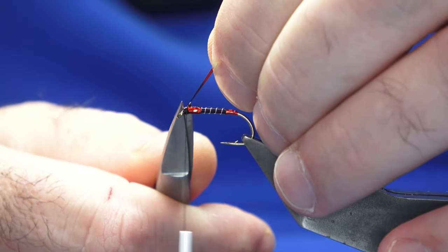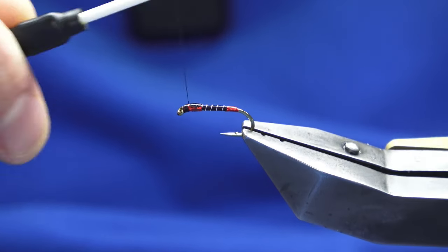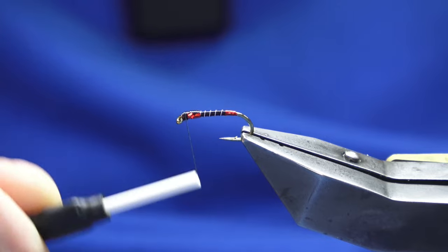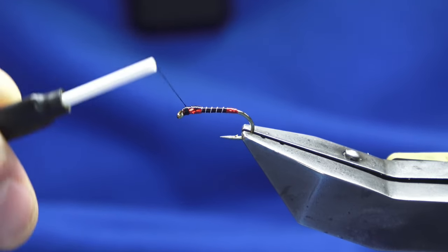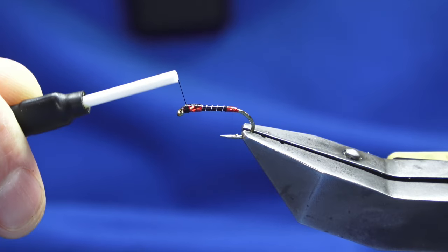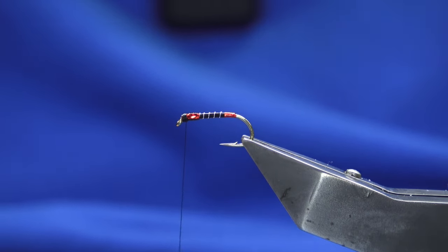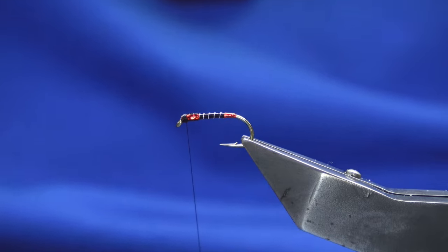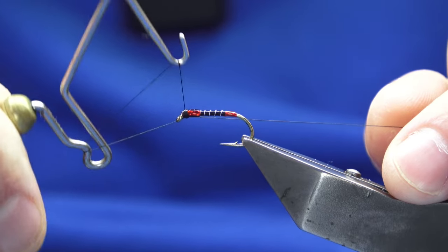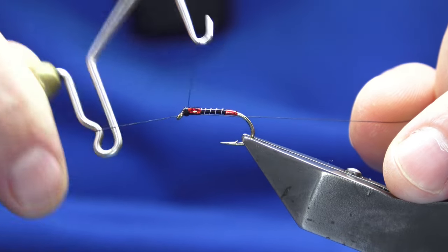You don't always have to use red with these wee patterns - your imagination has no bounds, no limits. I like to build a wee shape in the head at the front. Then I'm going to come in and put in a whip finish. Now, the name of this wee fly is called Ed's Raid.